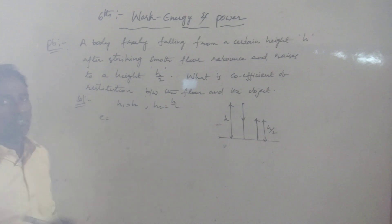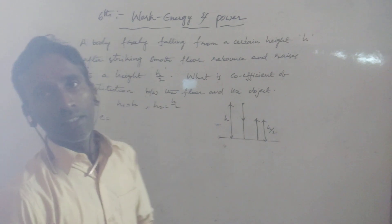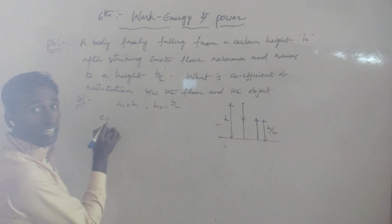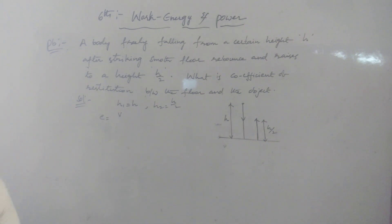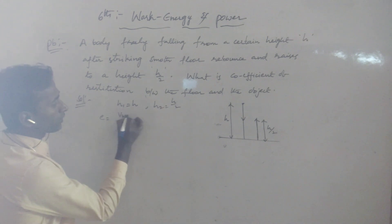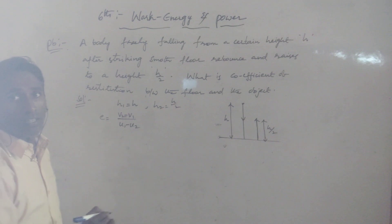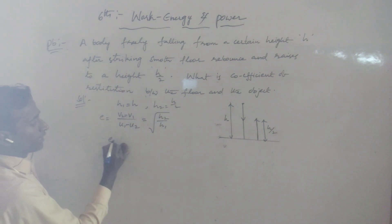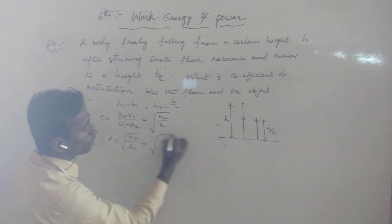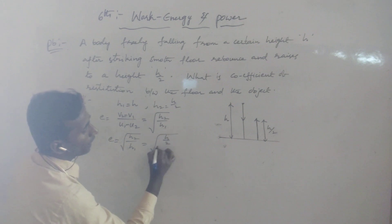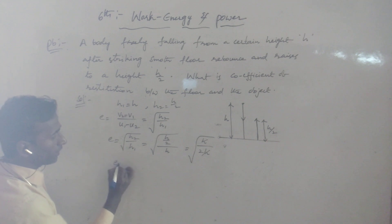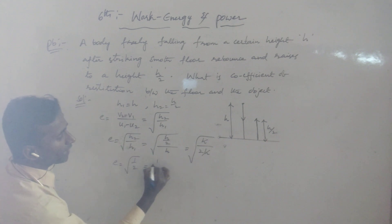We have the coefficient of restitution formula. It is defined as the ratio of relative velocities of separation after collision: e = (V2 - V1)/(U1 - U2). We also have a direct formula using heights: E equals under root of H2 by H1. Substituting: E equals under root of (H/2) divided by H, which simplifies to under root of 1 by 2, giving E equal to 1 by root 2.